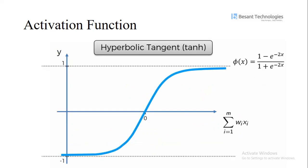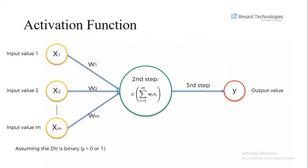The next thing is the hyperbolic tangent, nothing but tanh. The same as sigmoid but sigmoid starts from 0 and goes to 1. When it comes to hyperbolic tangent, it starts from minus 1 and slowly increases to 0, then reaches 1. The formula for hyperbolic tangent is: (1 minus e to the power of minus 2x) divided by (1 plus e to the power of minus 2x). So the output starts from minus 1 and ends with 1.